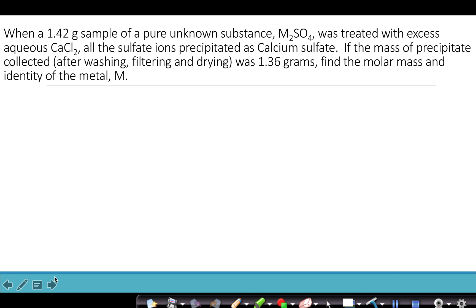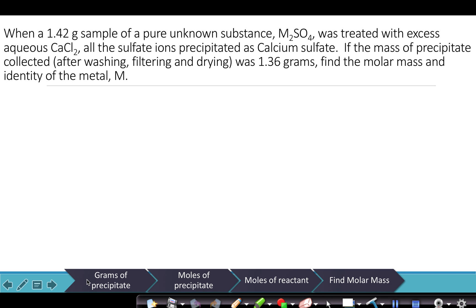In order to do this, the first thing we're going to need to do is figure out what steps we need. Usually for gravimetric analysis, we're going to go from the grams of precipitate to moles of precipitate, and then we're going to work backwards to get moles of some reactant that was present before the precipitate was formed. In this case, the next step is going to be to use that information along with the grams of the substance that were put in to find the molar mass.